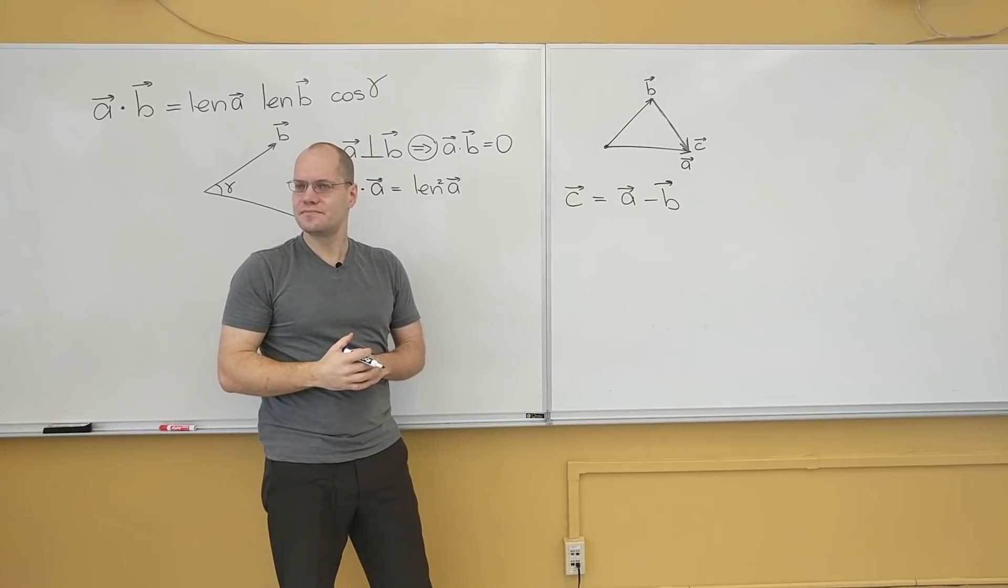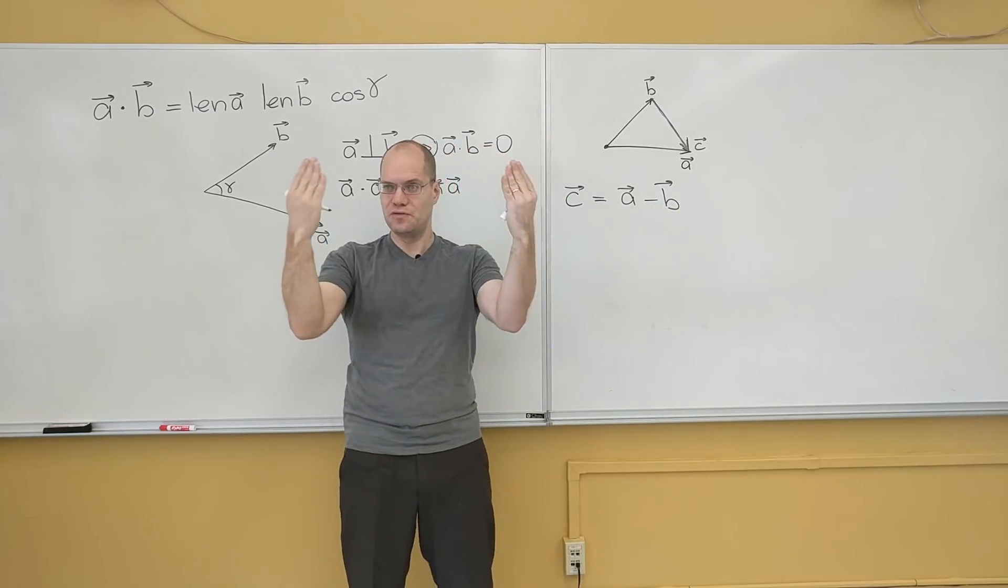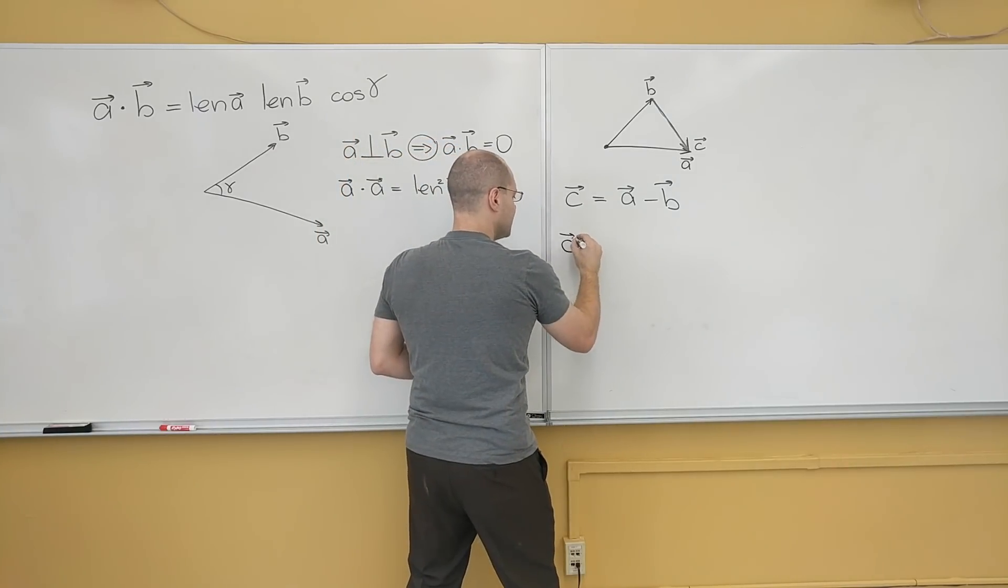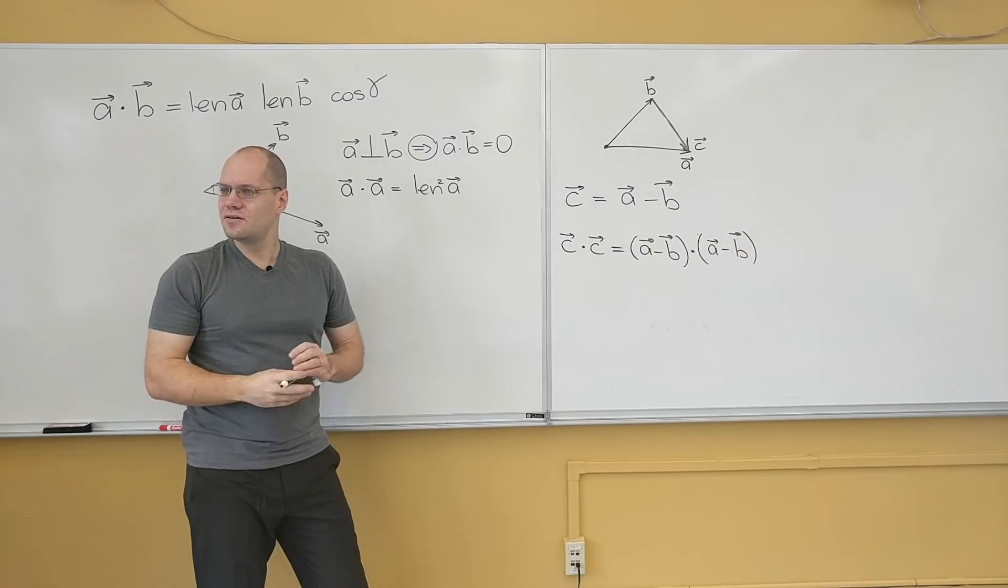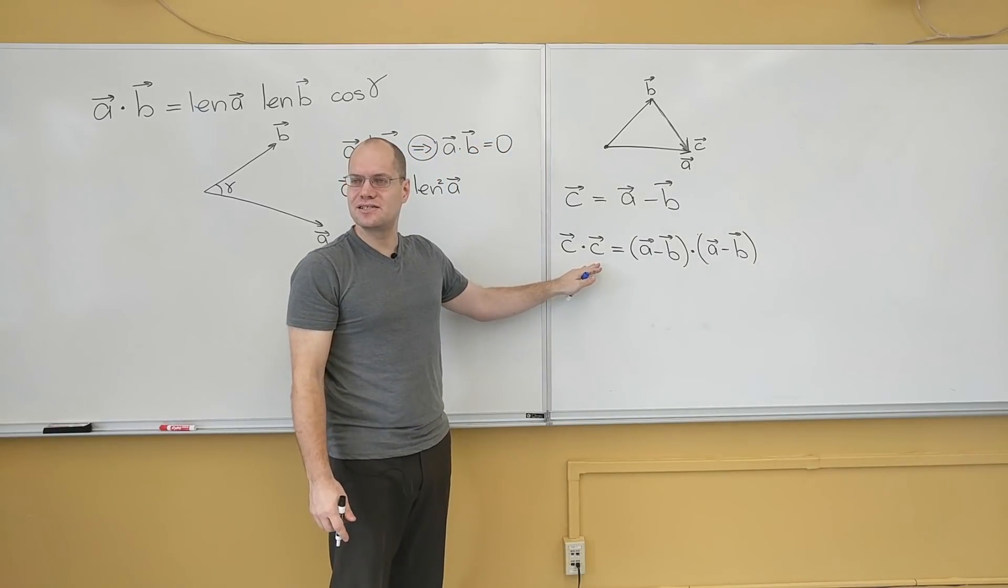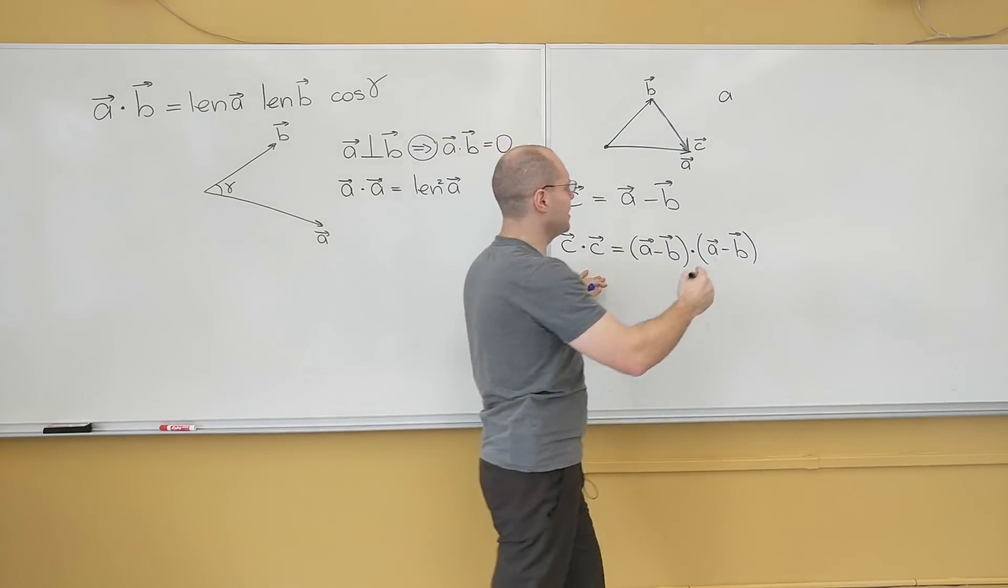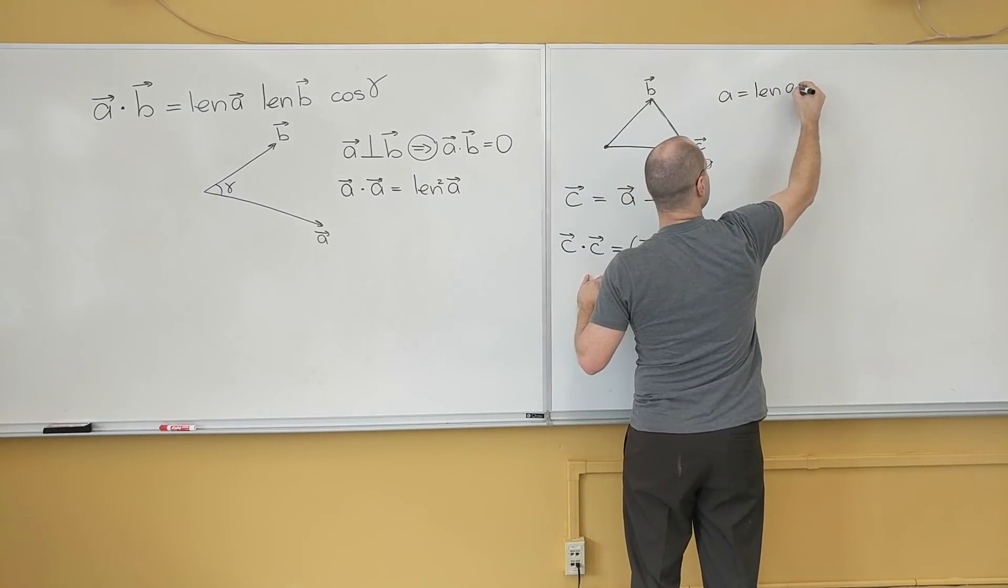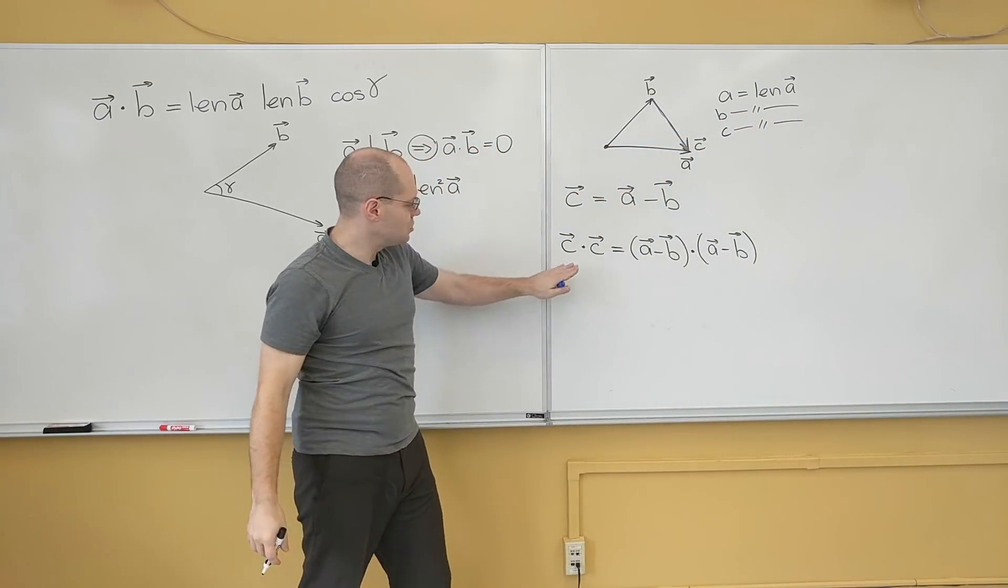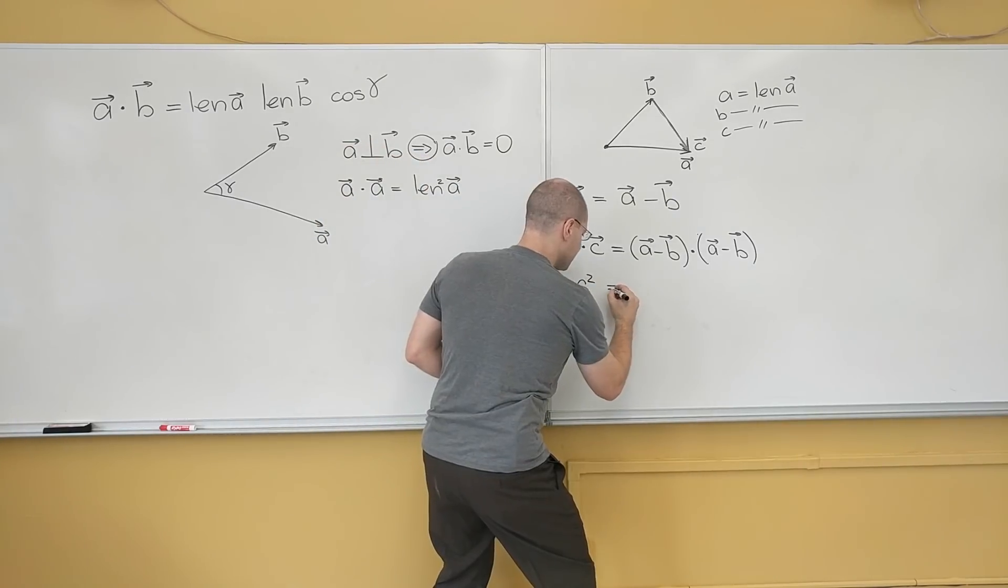That means that C dotted with itself equals A minus B dotted with itself. If two vectors are equal, then this one dotted with itself equals this one dotted with itself. So what will happen when we multiply this out? On the left we have C dotted with itself. I will use the following notation. The letter A without the arrow is the length of the vector A. So then this C dotted with C is the length of C squared.